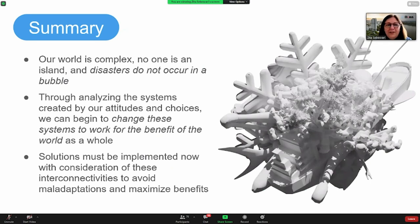And with that, I would like to come to an end. So what we see, and what is important for us, is that this world needs to be seen as a complex and with each other communicating system, and that disasters do not just occur far away from us, they are linked to us and to our decisions. And they do not occur in a bubble. And through analyzing the systems created by our choices, attitudes, and our political systems, we can actually begin hopefully to change these patterns.